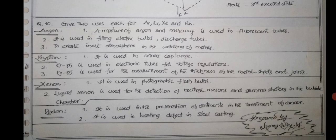Argon: A mixture of argon and mercury is used in fluorescent tubes. It is used in filling electric bulbs and discharge tubes to create an inert atmosphere in the welding of metals.